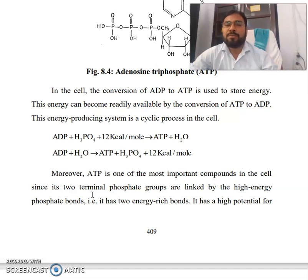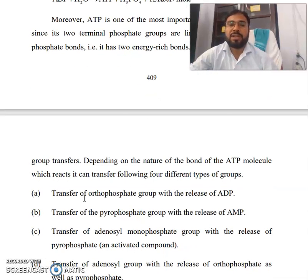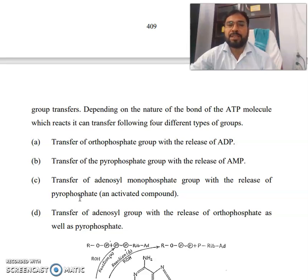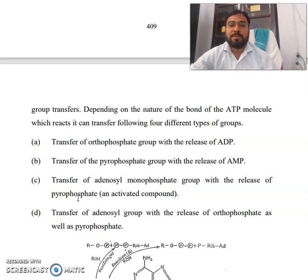ATP is one of the most important compounds in the cell since its two terminal phosphate groups are linked by high-energy phosphate bonds, giving it two energy-rich bonds and a high potential for group transfer. Depending on the nature of the bond cleaved, ATP can transfer four different types of groups: transfer of the orthophosphate group with release of ADP; transfer of the pyrophosphate group with release of AMP; transfer of adenosine monophosphate group with release of pyrophosphate; and transfer of adenosyl groups with release of both orthophosphate and pyrophosphate.